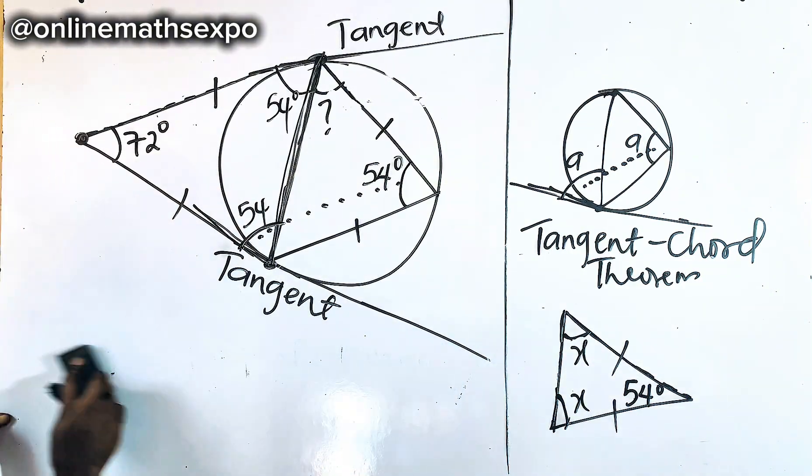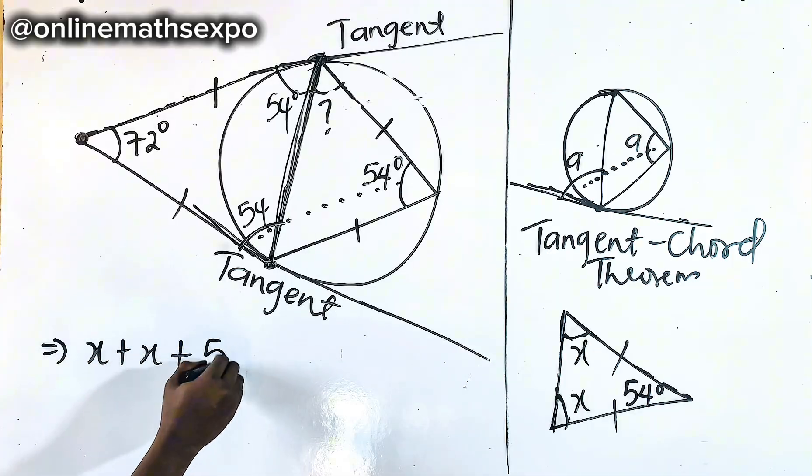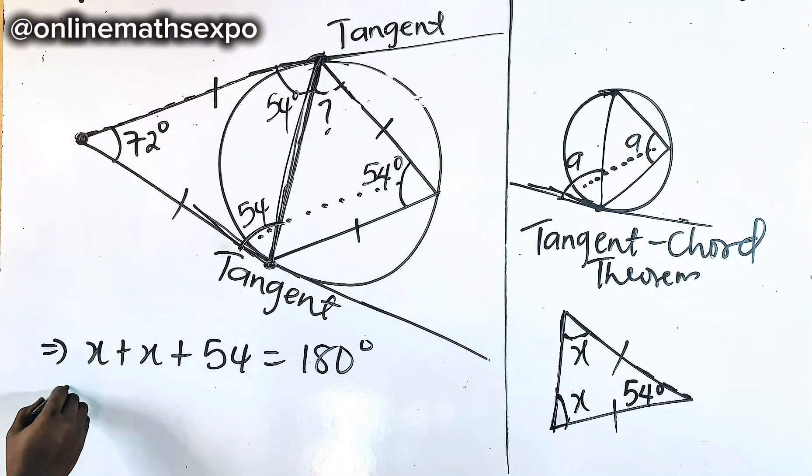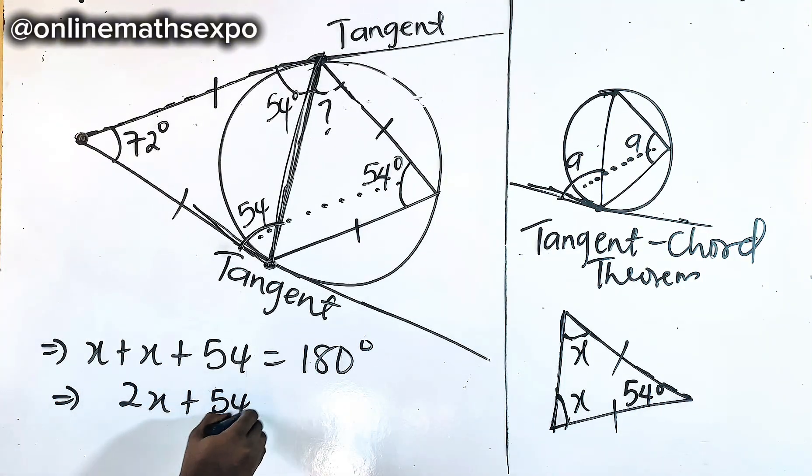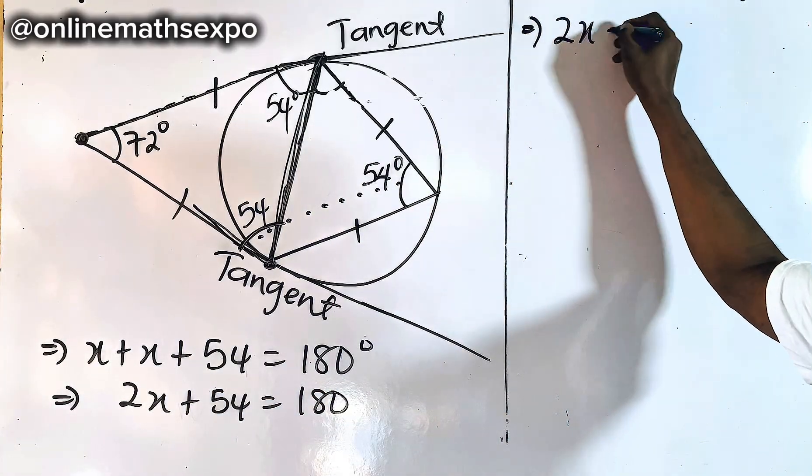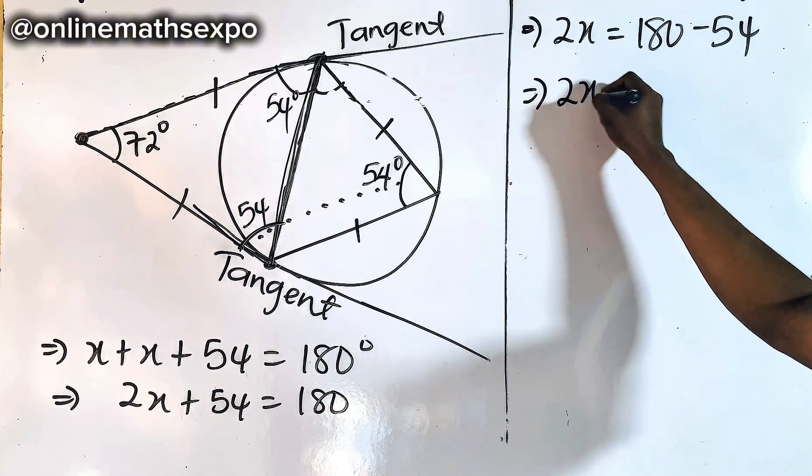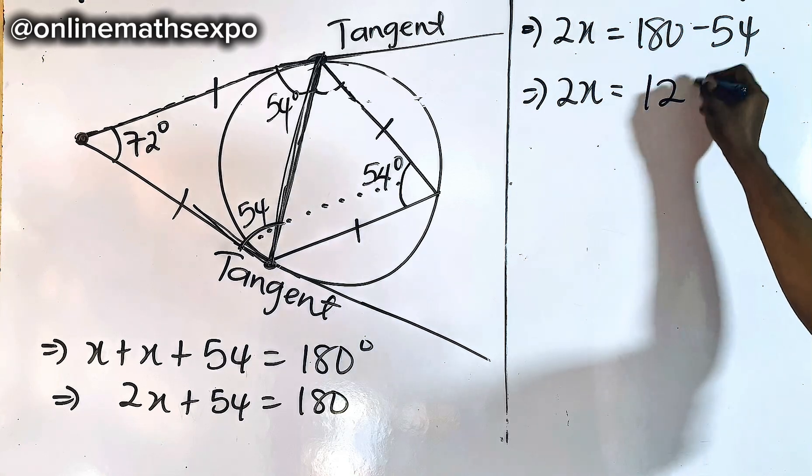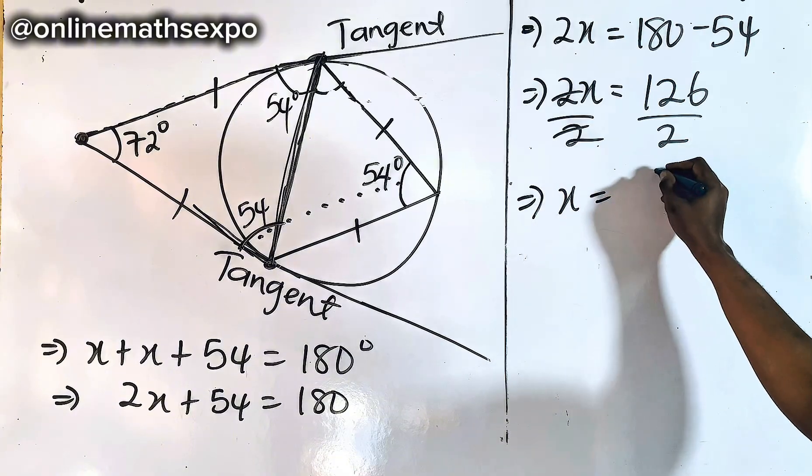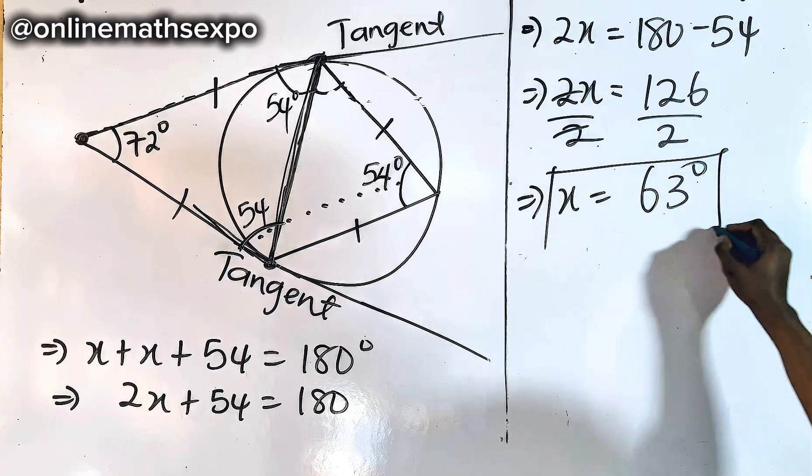So in conclusion, we have x add x add 54 should equal 180 degrees because this is a triangle. So we have 2x add 54 equals 180. To remove this, use the additive inverse. So we have 2x equals 180 subtract 54, which gives us 126. To get x, divide by 2, and x will give us 63 degrees. And that is the value of x. So the missing angle is 63 degrees.